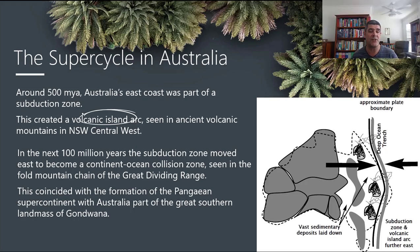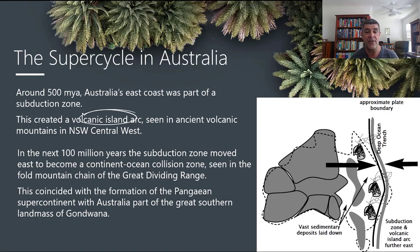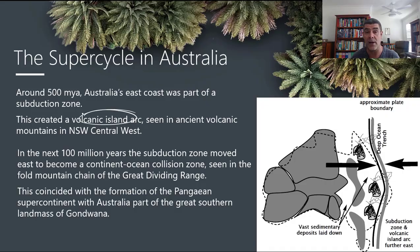Over the next 100 million years, the subduction zone moved further to the east relative to where we are now. As a result, the collision zone changed the way it affected orogeny — shifting from volcanic island chains to a fold mountain kind of orogeny. This is what we see with the Great Dividing Range, that large region of fold mountains along Australia's east coast, likely a result of this compression. This was also coinciding with the formation of Pangaea, made up of the northern supercontinent of Laurasia and the southern supercontinent of Gondwana, of which Australia was a part.